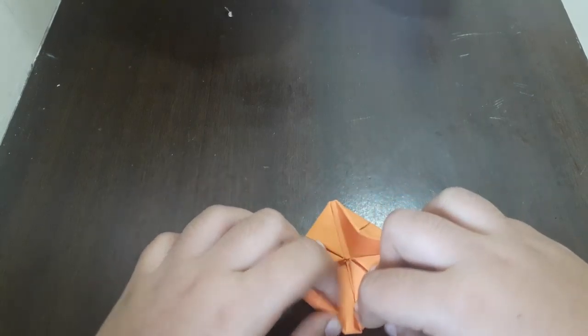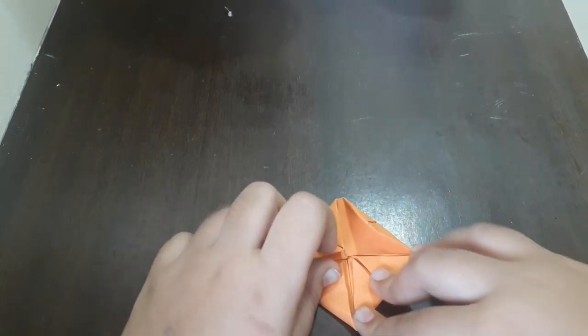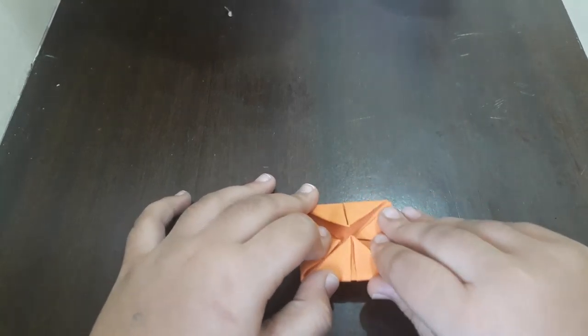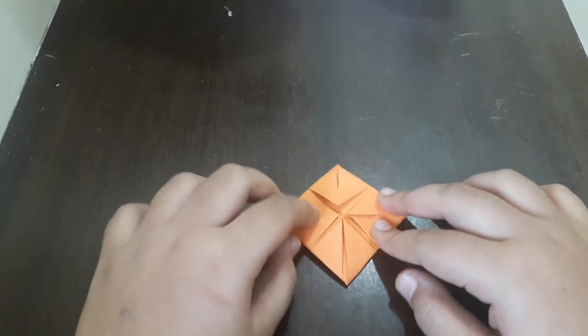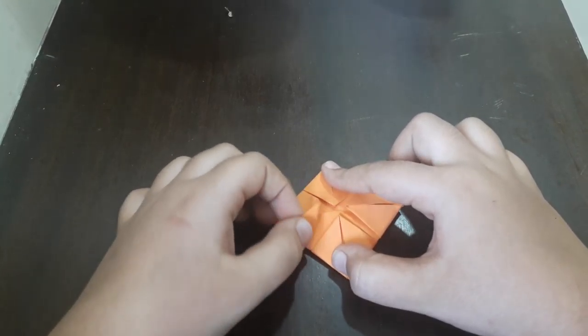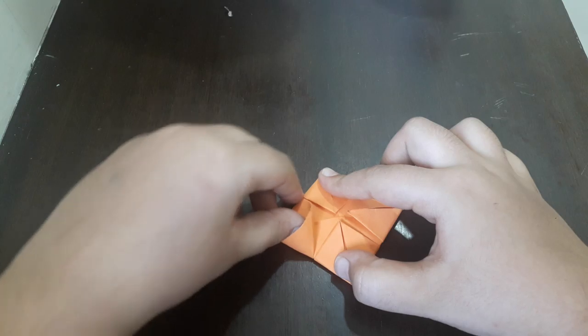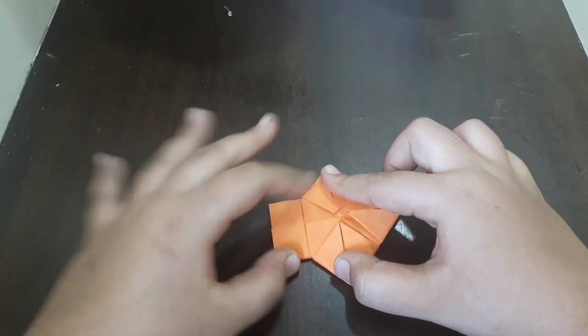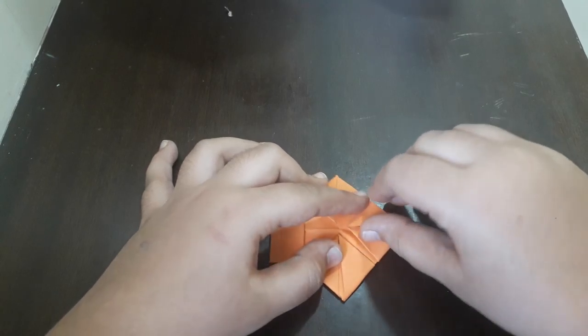You can take soft paper or hard paper or any color paper or white paper too. After turning it back, in the back side you'll get like this. Take any two sides and open it. After opening, repeat the same thing for the other side.